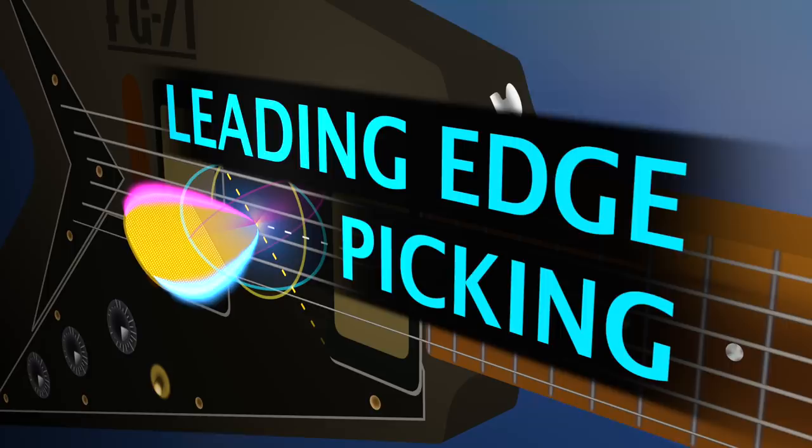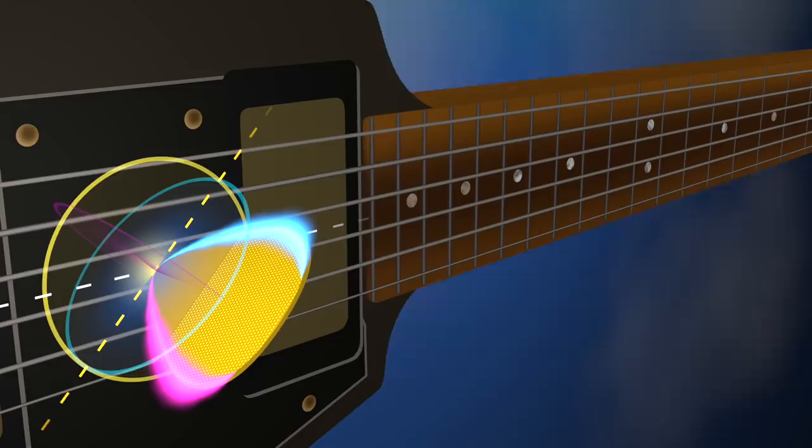If instead we rotate the pick the other way so the leading edge points up, now the reverse will happen. The trailing edge will hit the string on the downstroke and the leading edge will hit the string on the upstroke. This is the setup we call trailing edge picking.